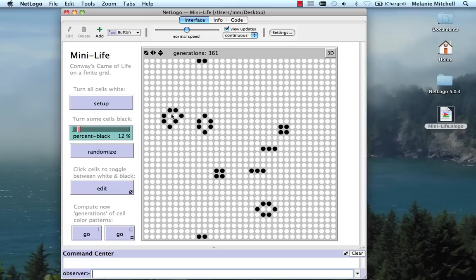So it settles down here to some very simple structures after getting rather complex. So let's turn this all the way up to, let's say, 50%.